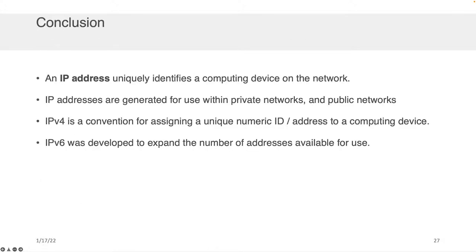The main conclusions: the IP address uniquely identifies a computing device on a network. IP addresses are generated for use within private networks as well as public networks. IPv4 is a convention for assigning a unique numeric address to a computing device, and IPv6 was developed to expand the total number of available addresses, because four billion is definitely not enough.